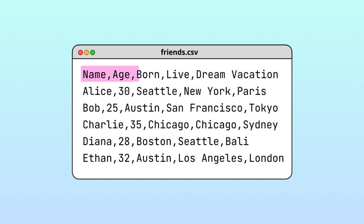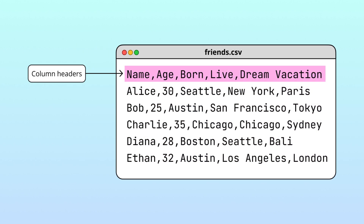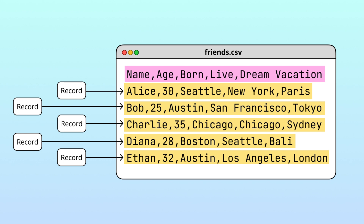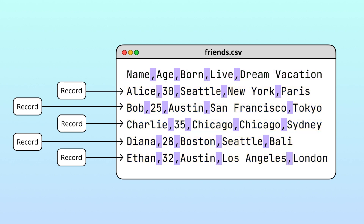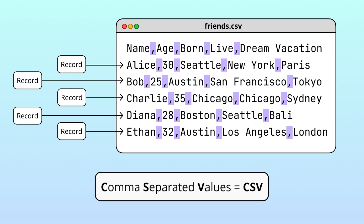The first row of the file contains the column names, and the rows below hold the actual data or records. Each record is a new row with individual values separated by commas. That's why this format is called comma-separated values, or CSV.